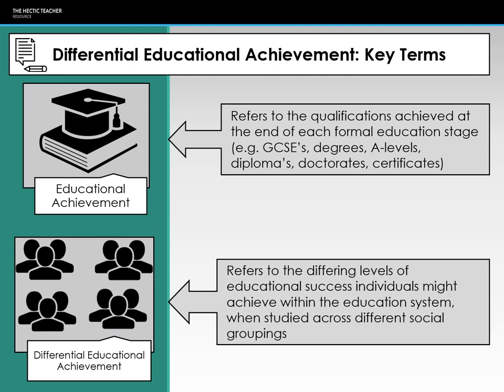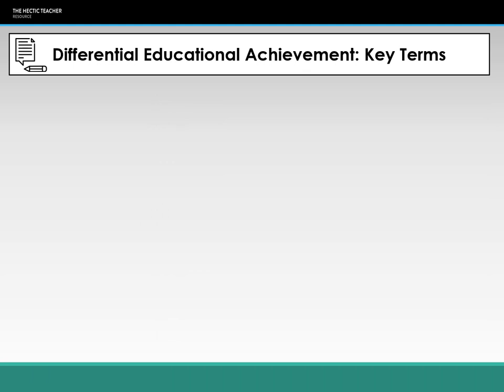Differential educational achievement refers to how different groups within society achieve educationally. The exam board focuses on gender, ethnicity, and social class, though it could be expanded to any subgroup. Since social class is difficult to determine, sociologists tend to use the terms 'advantaged' and 'disadvantaged' students as a quantifiable, consistent measure of who is who.